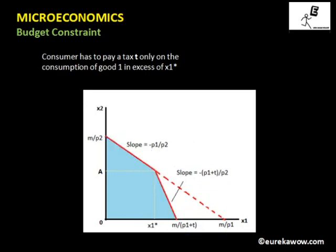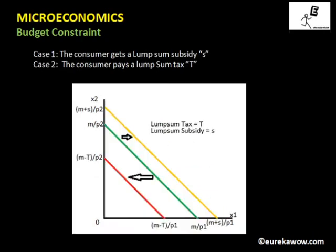Now let's look at the case of a lump sum tax or subsidy. If the government imposes a lump sum tax T, the consumer pays T regardless of how many units they consume. This acts like a decrease in income — if the initial budget line had intercepts m by p1 and m by p2, then with lump sum tax T the income falls from m to m minus T.